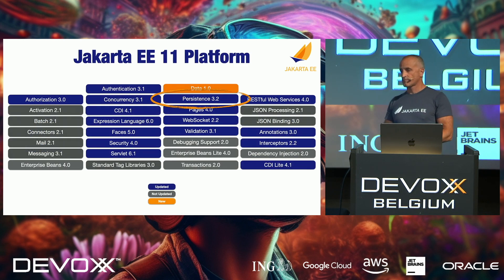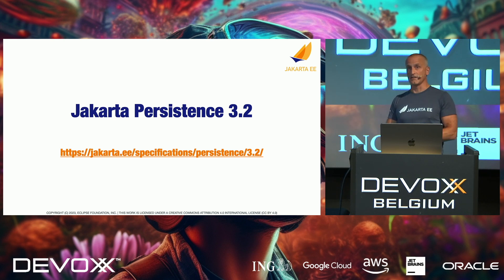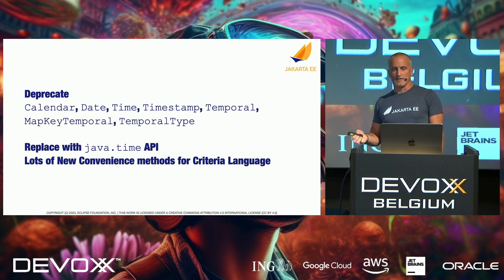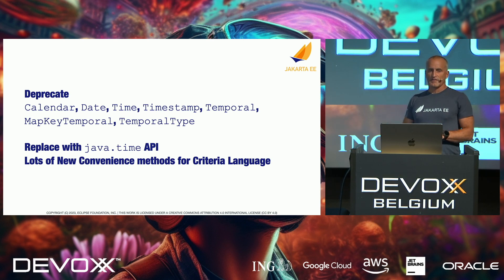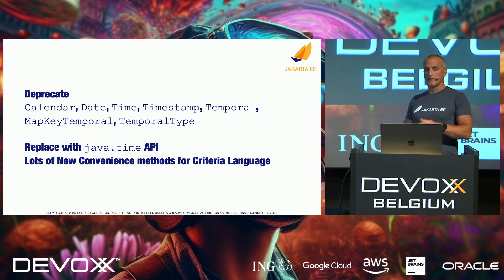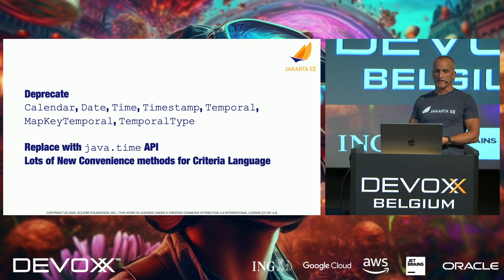For Jakarta Persistence, they actually have a lot of updates — I couldn't list everything on this slide, so go to the URL shown. It's still a minor update, but it's very significant: they're deprecating everything around Calendar, Date, and old date/time classes, and replacing them with the Java Time API. There are also many new convenience methods added throughout — it's like a page full — so go check that URL.